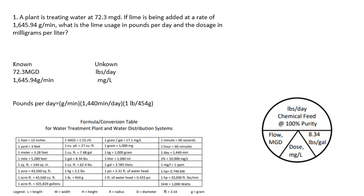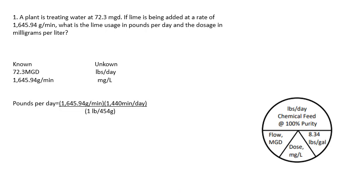Pounds per day is grams per minute times 1,440 minutes in a day, and one pound equals 454 grams — from the Florida distribution and water treatment formula conversion table. So: 1,645.94 grams times 1,440 minutes in a day, then divide by 454 grams to cancel units and get pounds. That gives us 5,220.60 pounds per day.